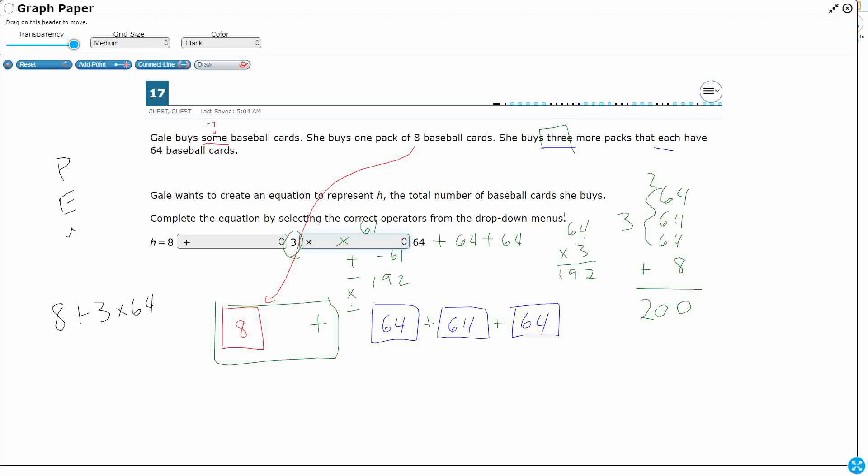All right, looking at my order of operations, right, I'm going to multiply first. So three times 64, we just did that, 192. So this simplifies to eight plus 192.